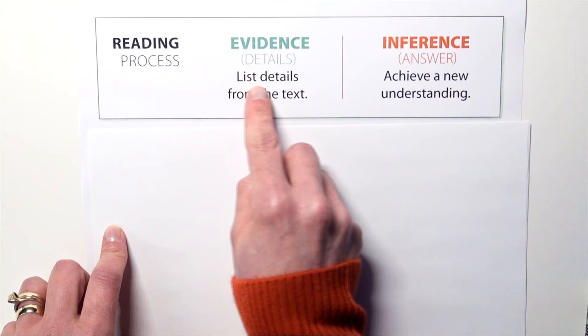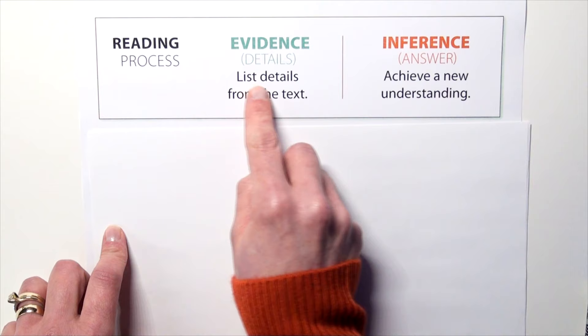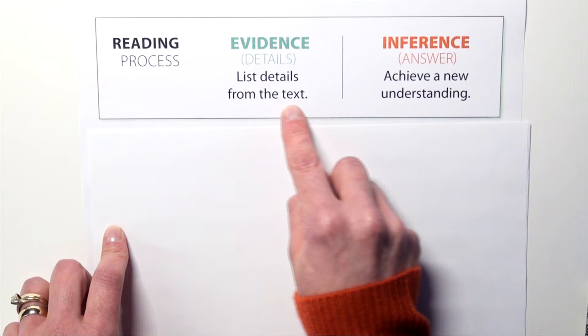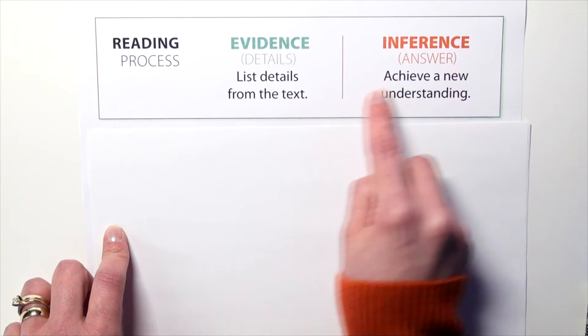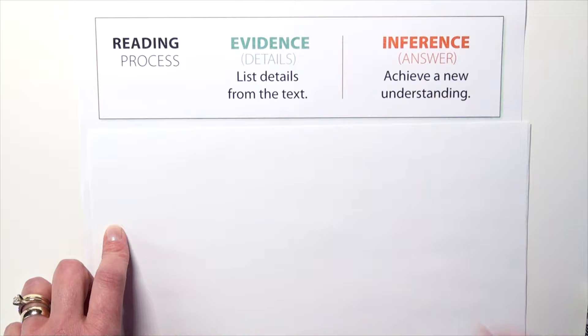The way the reading process works is you first look at the relevant details, list those specific textual details to figure out what they mean — the answer to the question, the inference. There's a whole lot of magic that happens between here and here, and we need to break it down into five explicit instructional steps for our students.